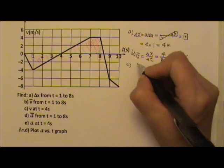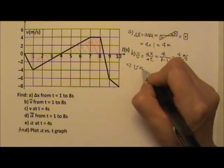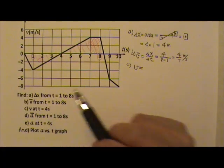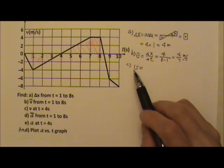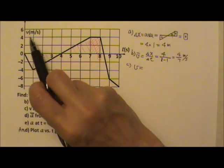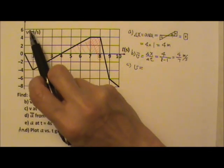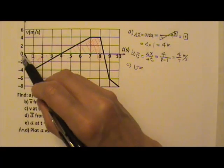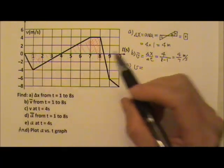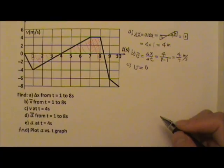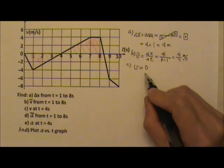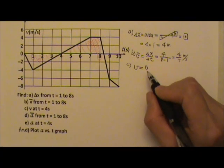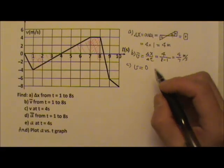For instantaneous velocity — the velocity at a certain moment — you just read off the graph because it's a velocity graph. At 4 seconds, the graph gives you 0. If it's 0, you don't really need to write the units — you can just write 0.